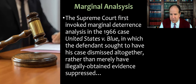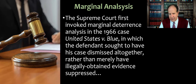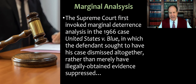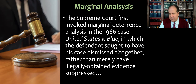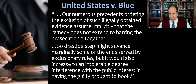The Supreme Court first invoked this marginal deterrence analysis back in 1966 in the case United States v. Blue. The defendant wanted, instead of just having evidence excluded, to have his case dismissed altogether — which would have been a way of extending the exclusionary rule to give it more bite by resulting in an automatic dismissal. Keep in mind: even if the defendant confessed to a crime but the police didn't give Miranda warnings, we can still put the person on trial and use any other evidence the police had apart from that particular confession.